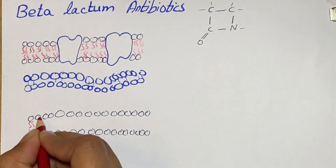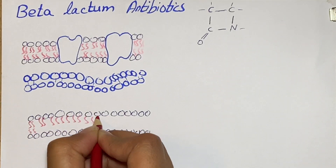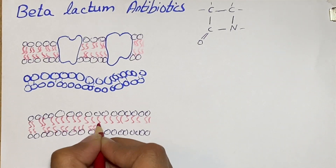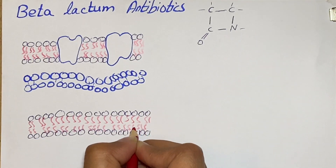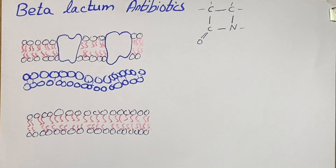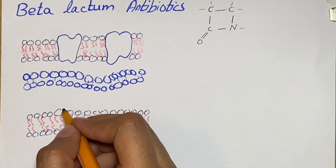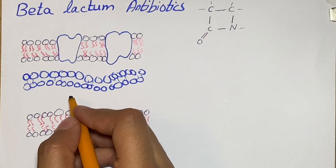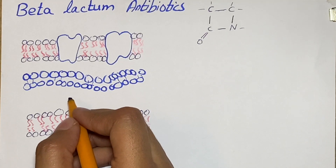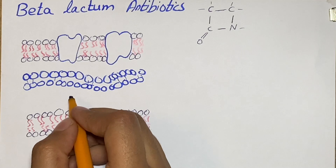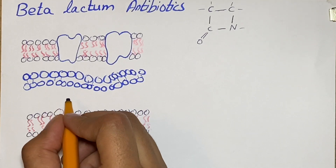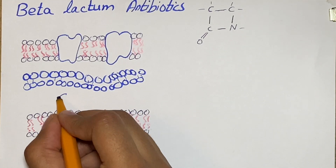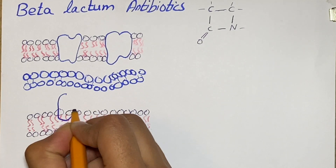After that there is presence of the cell membrane, which again has a lipid bilayer. This also has some proteins which are embedded in the lipid bilayer structure. These proteins are called penicillin-binding proteins, or PBPs, which are the major site for the binding of these antibiotics.